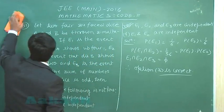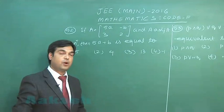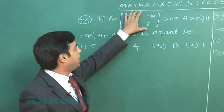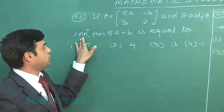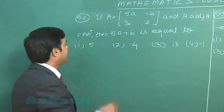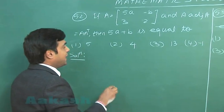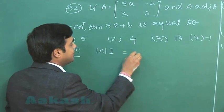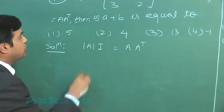Let us move to the next one. If A is given to me, a matrix, and A adjoint A equals A into A transpose, then the value of 5a plus b is to be obtained. Let us try this one. A adjoint A, that is determinant A into identity matrix, equals A into A transpose.